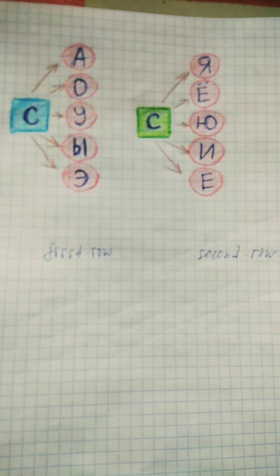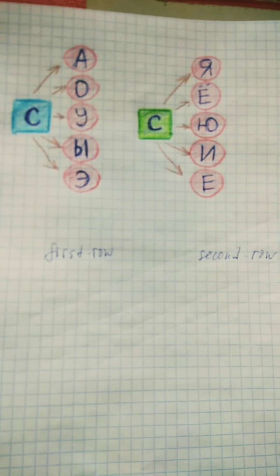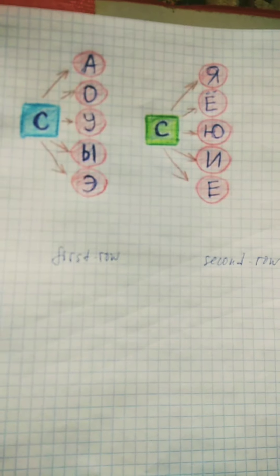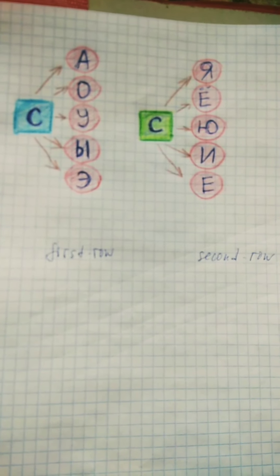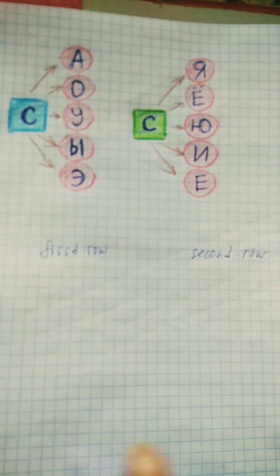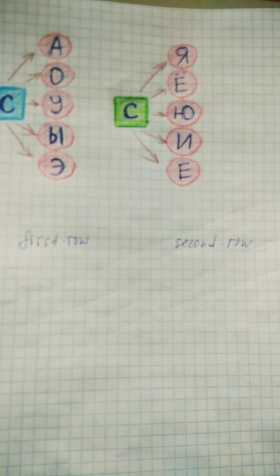We have ten vowels in Russian language. Here are the first vowels: A, O, U, Y, E. And the second vowels.